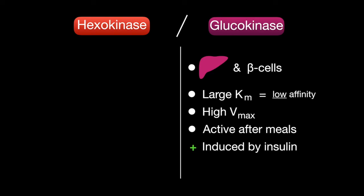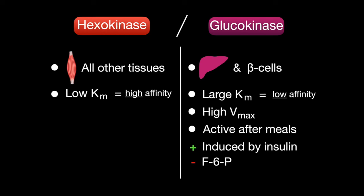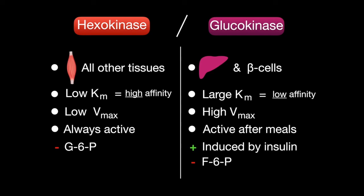Glucokinase is induced by insulin, a common hormone released after a meal, and is inhibited by fructose-6-phosphate. Hexokinase, on the other hand, is used in all other cells. It has a lower KM, giving it a higher affinity and a lower Vmax, so cells can process glucose regardless of blood concentrations. It is not induced by insulin, and its immediate product, glucose-6-phosphate, acts as a negative feedback inhibitor.